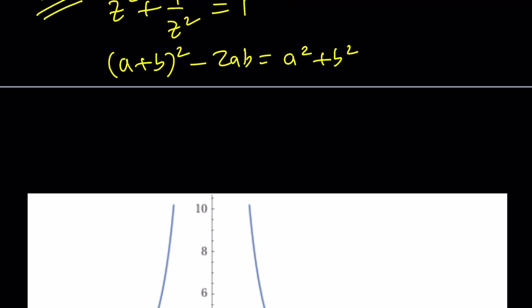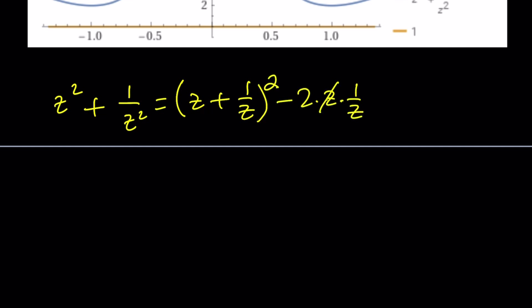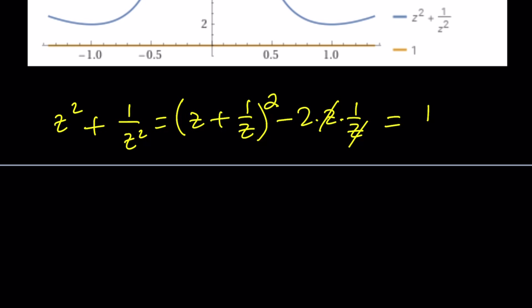Now let's see how we can apply this identity. In this case, a is going to be z and b is going to be one over z. So z squared plus one over z squared can be written as (z + 1/z)² minus 2ab, which is two times z times one over z. That just turns into two because z and one over z are reciprocals. We are given that this sum equals one. So (z + 1/z)² minus two equals one, which means (z + 1/z)² equals three.